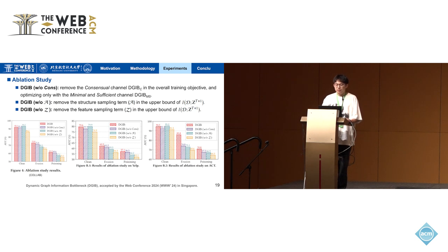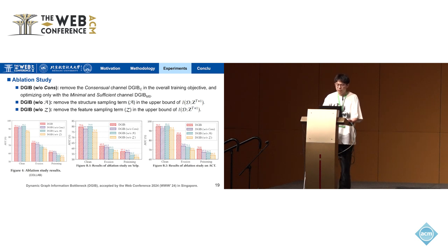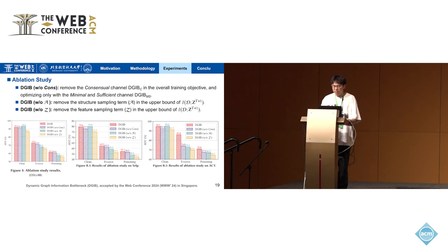In the ablation study, we analyzed the effectiveness of three variants. The overall DJIB outperforms the other three variants. Notably, DJIB without the structure sampling term A already exceeds the original DJIB-Bern on the clean Collab dataset by about 1.1%. This is within our expectation, as the structure sampling term A contributes to robustness by refining structures and compressing feature information, which will necessarily reduce performance on clean datasets. We witness DJIB surpassing all three variants when confronting evasion and poisoning adversarial attacks, demonstrating the importance of all proposed components for robust representation learning.